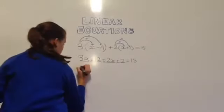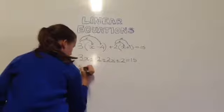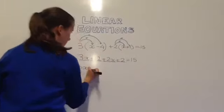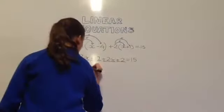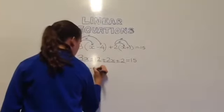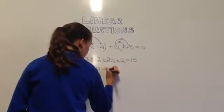So 3x plus 2x equals 5x and then negative 12 plus 2 equals negative 10 and this equals 15.